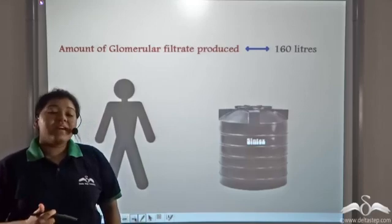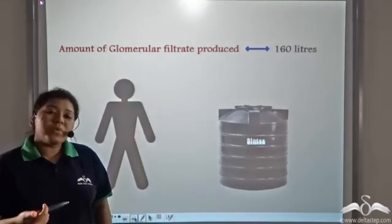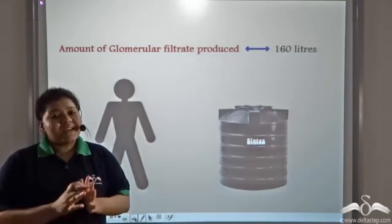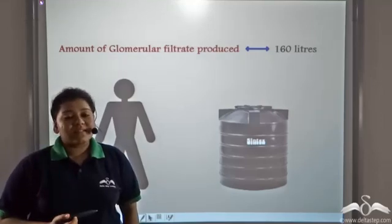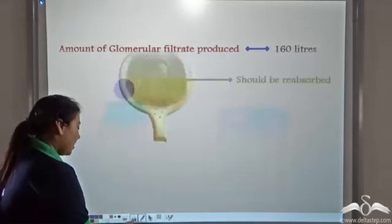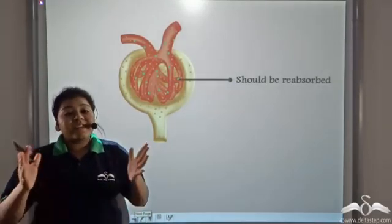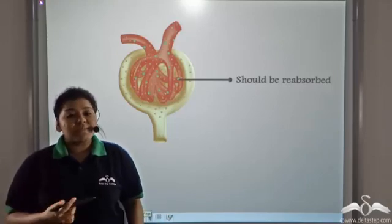But the amount of urine generated in the body is only about 1.2 liters. So why is there such a drastic difference in the two amounts? It is only possible if a greater amount of glomerular filtrate is getting reabsorbed.